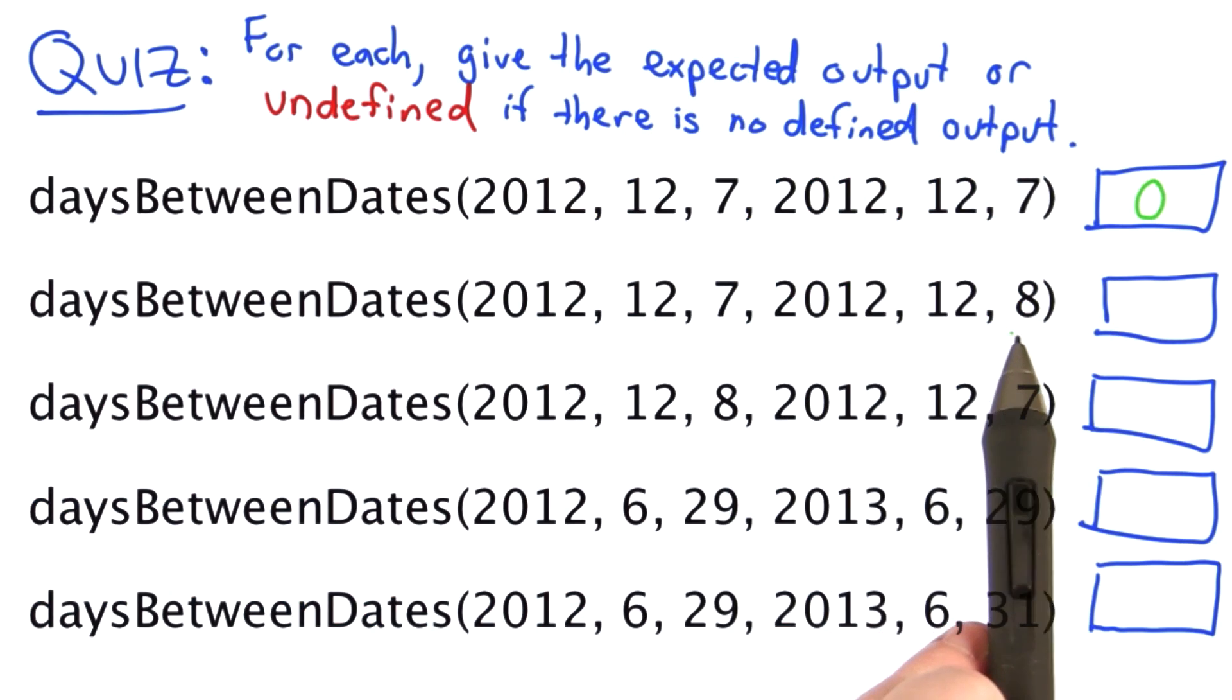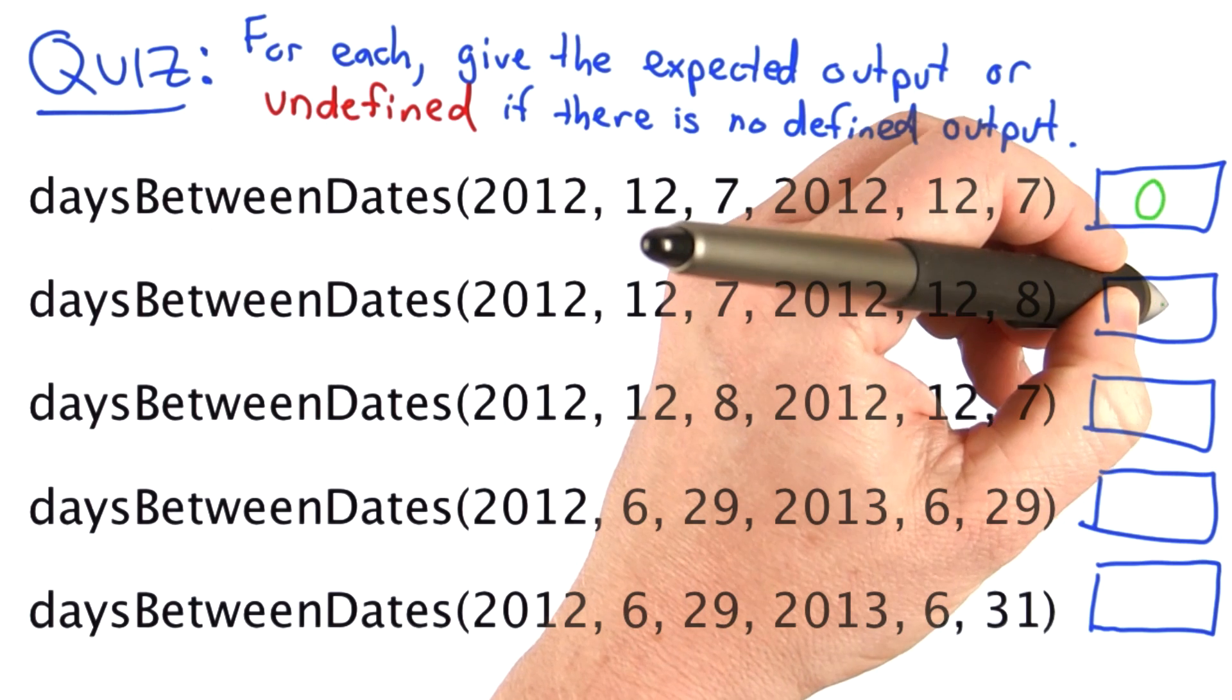The second one: the second input is 1 day after the first input, so the output should be 1.